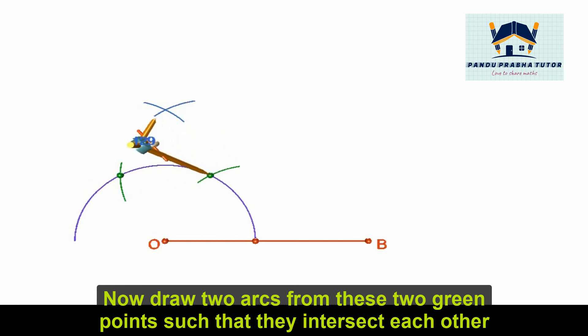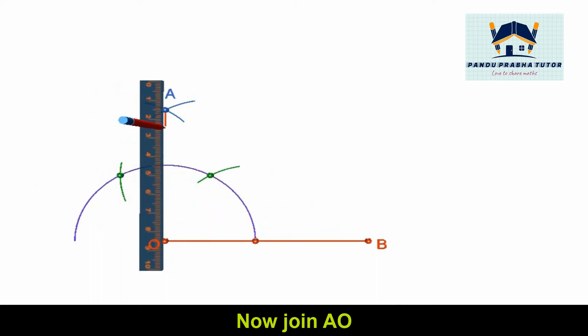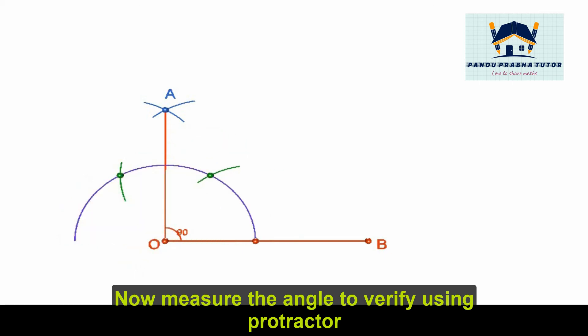Mark the point where two arcs intersect. Join AO. AOB is the required right angle, that is 90 degrees. Verify it by measuring using protractor.